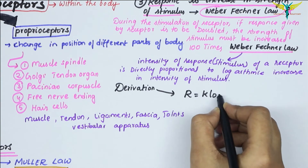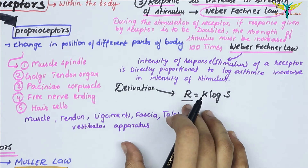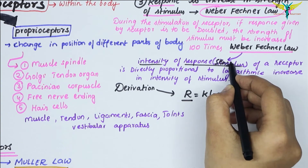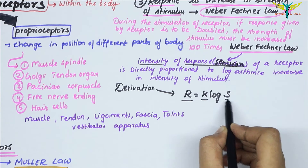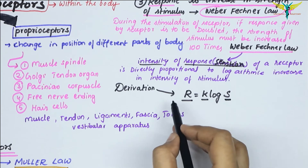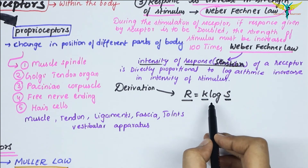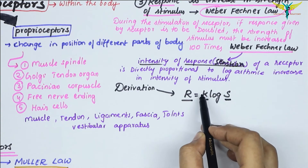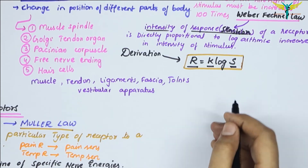The derivation of the Weber-Fechner Law is: R = k log S, where R is the intensity of the response or sensation, k is a constant, and S is the intensity of the stimulus. This formula indicates that the intensity of a response is directly proportional to the logarithmic increase in the intensity of the stimulus.